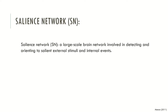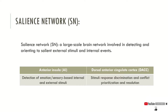The salience network is a large-scale brain network involved in detecting and orienting to salient external stimuli and internal events. When we have some physiological or psychological need, this network orients our attention to stimuli coded in memory that can satisfy that need. It has ramifications in the anterior insula — responsible for detecting emotion and sensory-based stimuli — and the dorsal anterior cingulate cortex, associated with stimulus-response discrimination and conflict prioritization and resolution.